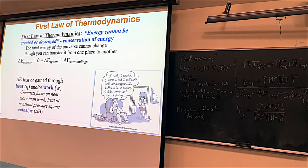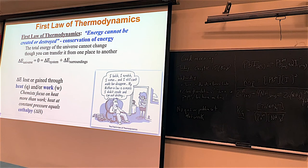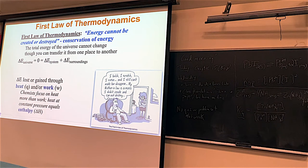So far we've been using enthalpy as our guide to whether a reaction is going to occur or not. But we're going to see there are better ways to do that in this chapter. Enthalpy has been the big player — negative delta H is exothermic, positive delta H is endothermic.